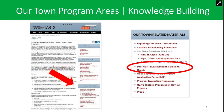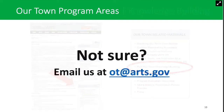If you think your project is a fit for knowledge-building, we strongly recommend you read descriptions of past funded knowledge-building projects on our website. From the Our Town Guidelines page, click the link called Past Our Town Knowledge Building Grants. You'll find that in the box titled Our Town Related Materials, and this will help you gauge whether your project is a fit for this program area. If after reviewing these materials you're still not sure, please email us at ot.arts.gov and we'll help you select the right one.